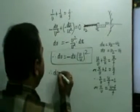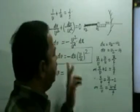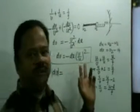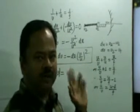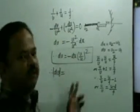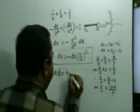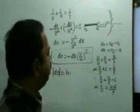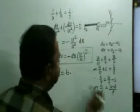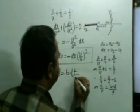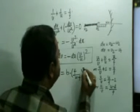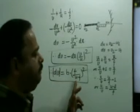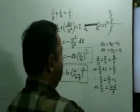Therefore, dv = the given length of the linear object is B. Taking the magnitude of dv (ignoring plus/minus), the length of the image = B into (v/u)², which gives us the length of the image as B into [f/(u minus f)]².